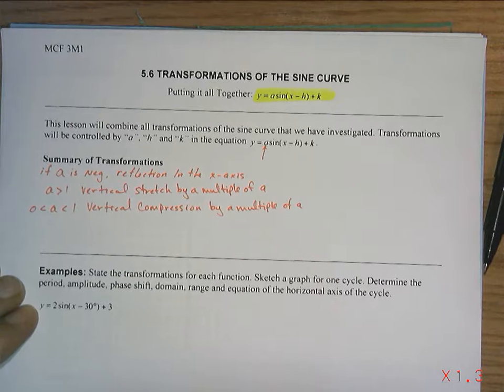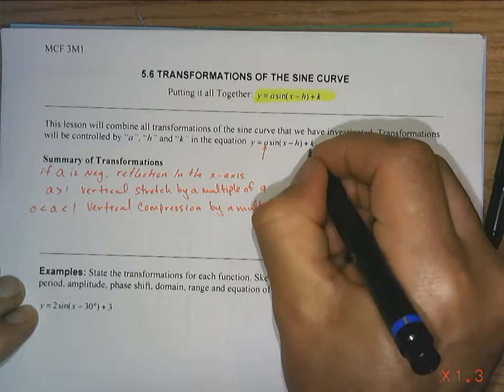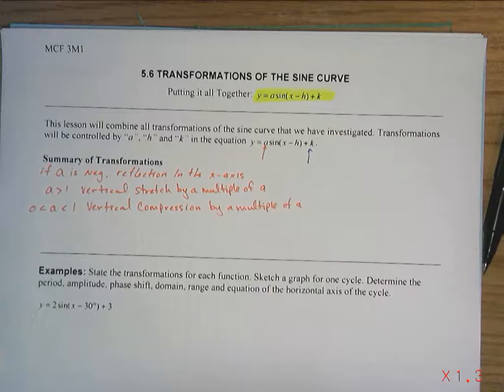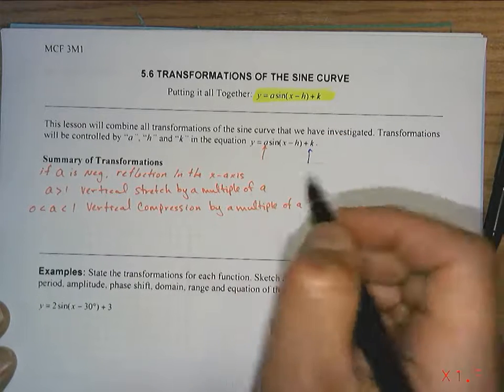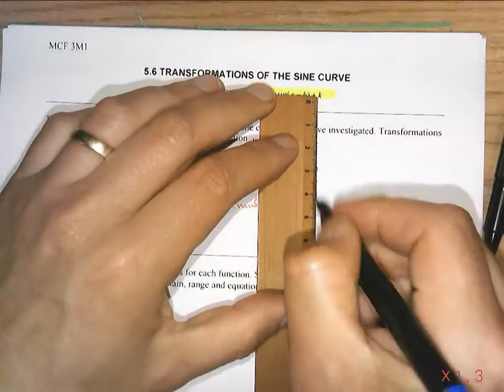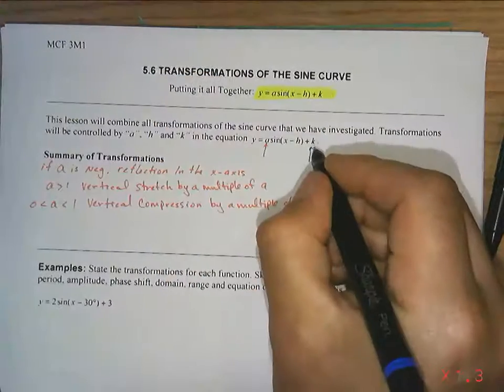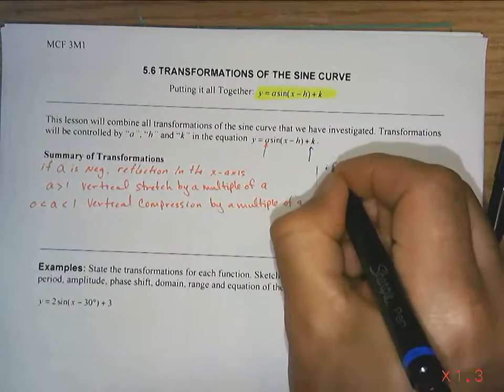What about K? Well, K is kind of interesting. K is outside the sine function, so K is also going to affect the sine curve vertically because it's outside the sine function.